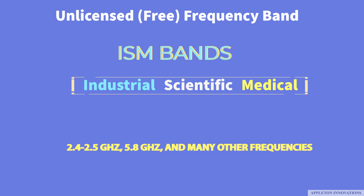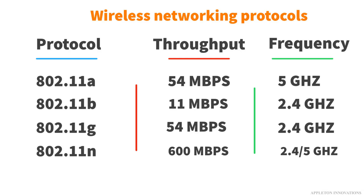These are license-free frequency bands that we can use in order to send data over the wireless network. The 802.11 family of radio protocols are commonly referred to as Wi-Fi. 802.11a supports up to 54 Mbps using the 5 GHz unlicensed band.